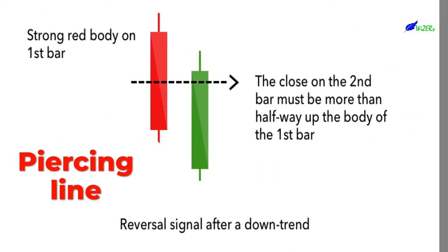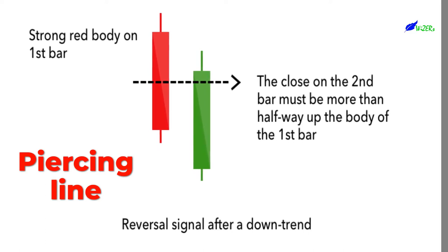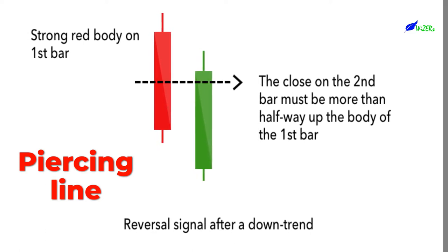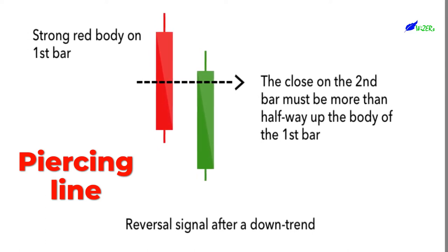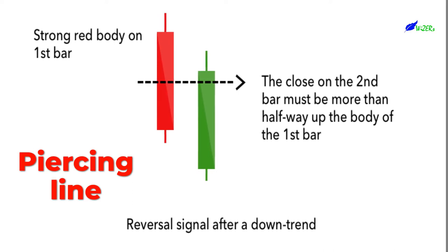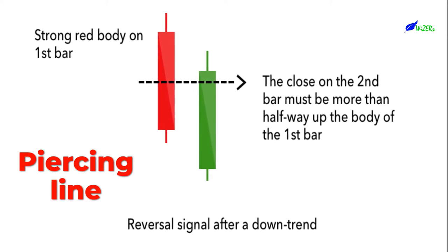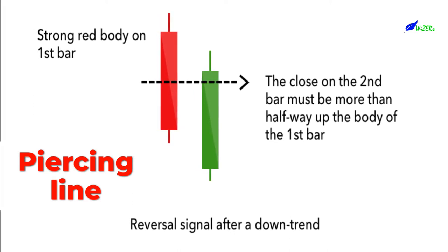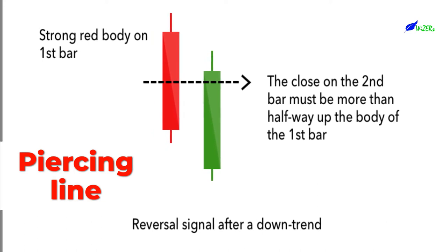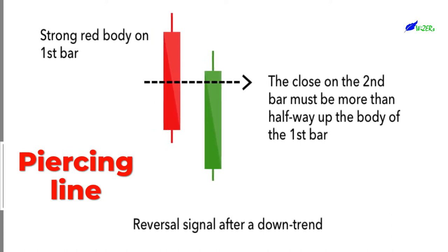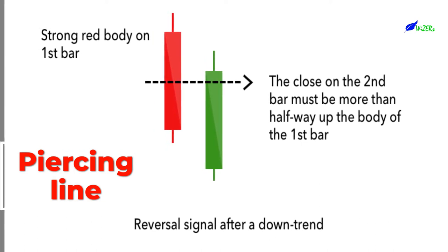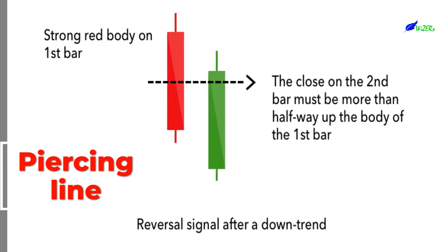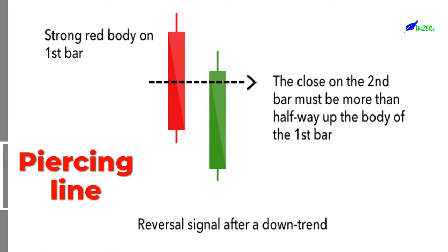Piercing Line. The piercing line is also a two-stick pattern, made up of a long red candle followed by a long green candle. There is usually a significant gap down between the first candlestick's closing price and the green candlestick's opening. It indicates a strong buying pressure, as the price is pushed up to or above the mid-price of the previous day.